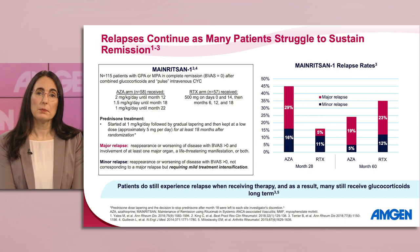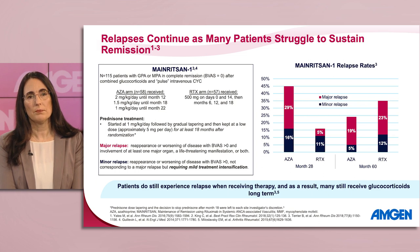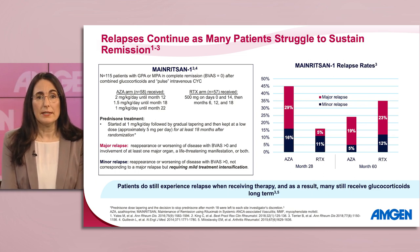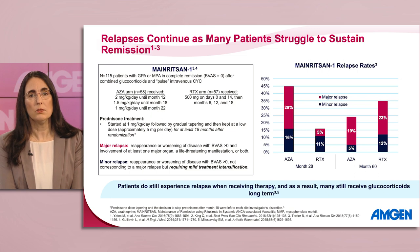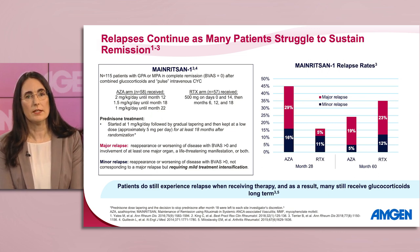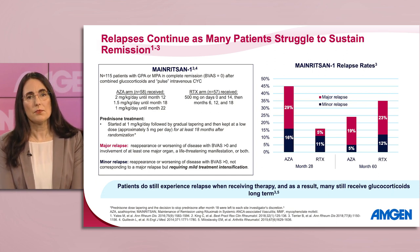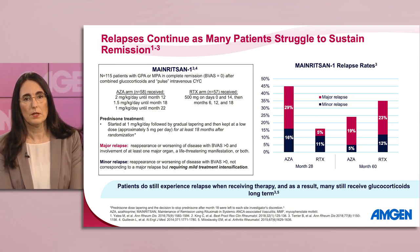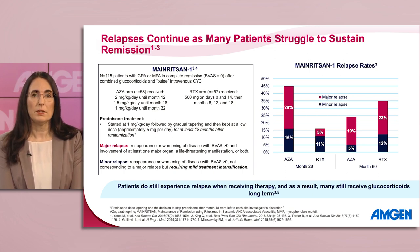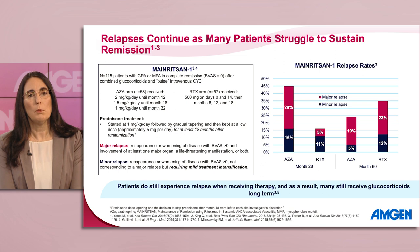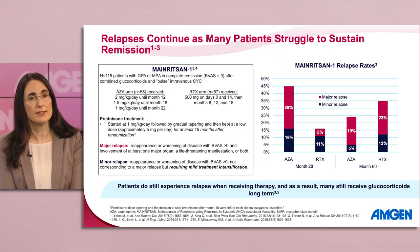Prednisone treatment was used on both treatment arms starting at one milligram per kilogram per day, followed by a gradual tapering, and then kept at a low dose of approximately five milligrams per day, for at least 18 months after randomization. Prednisone dose tapering and the decision to stop prednisone after month 18 were left to the discretion of each site investigator. Relapse rates were measured at months 28 and 60, with relapse defined as a reappearance or worsening of disease with BVAS greater than zero.